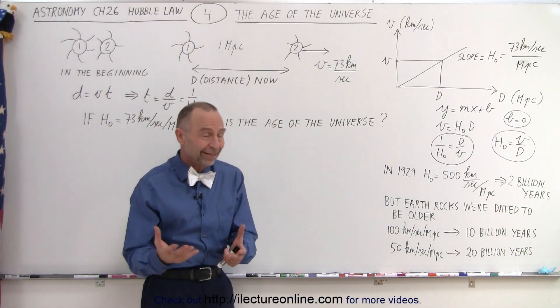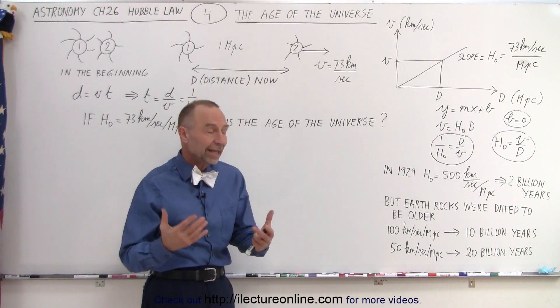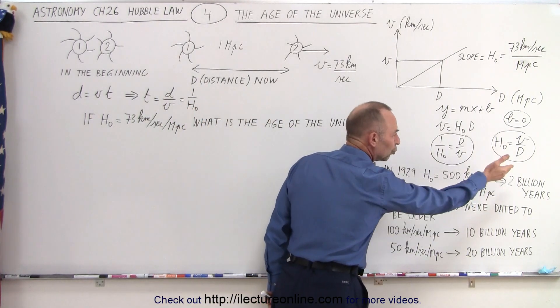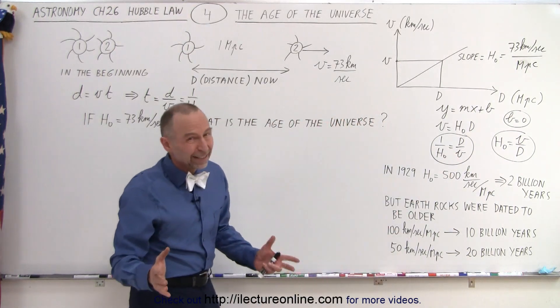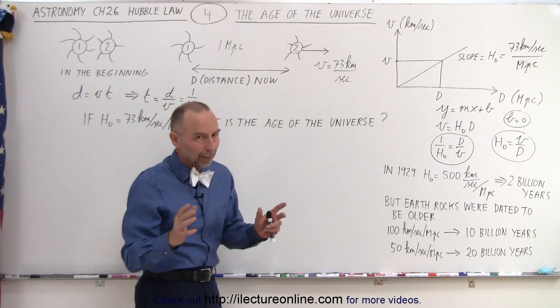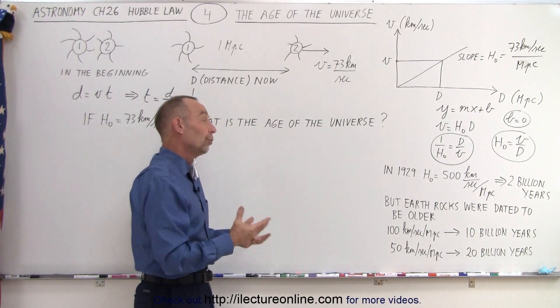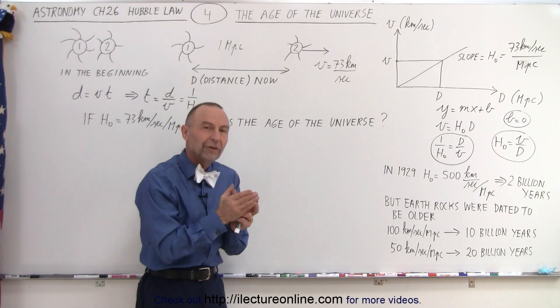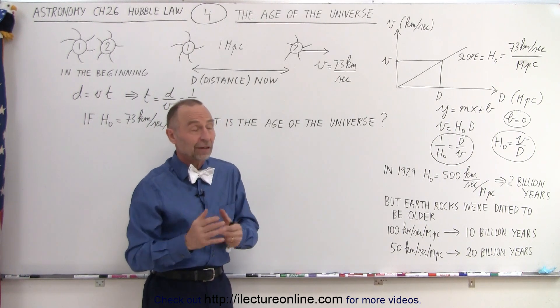When Hubble came up with a constant back in 1929, he realized at 500 km per second per megaparsec, the universe should be about 2 billion years old. Now we know from testing rocks during radioactive dating, we realized that Earth rocks were older than that.